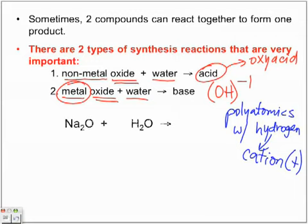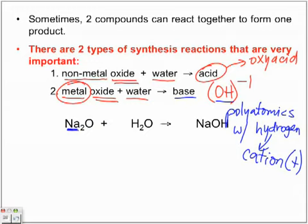Let's look at an example: a metal oxide plus water. We're going to take the metal — and remember the base has the hydroxide — so we combine this metal with hydroxide and get the formula NaOH. Remember that hydroxide is polyatomic. We put the two in front, and the following compound is balanced.